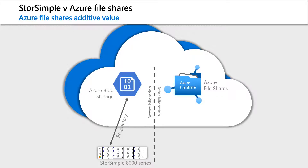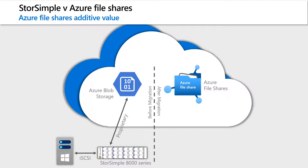Blob storage is what you are currently using with your StoreSimple deployment. When you go into a storage account used by StoreSimple and look at the data, you see a flat namespace — you do not see a hierarchy of files and folders. Rather, what you see is a bunch of objects with GUIDs. Blob storage is optimized for storing massive amounts of unstructured data and is meant for applications like StoreSimple to use, and is not meant for users to interact with. StoreSimple Blob storage can only be accessed through a StoreSimple device, and to use SMB shares you need to iSCSI attach a Windows Server for users to connect to.